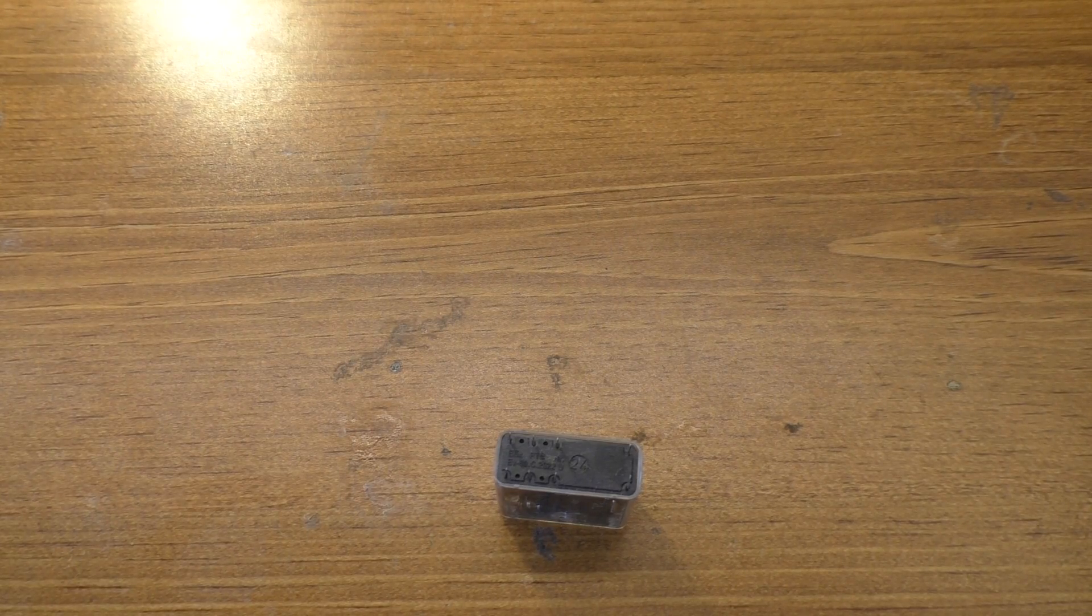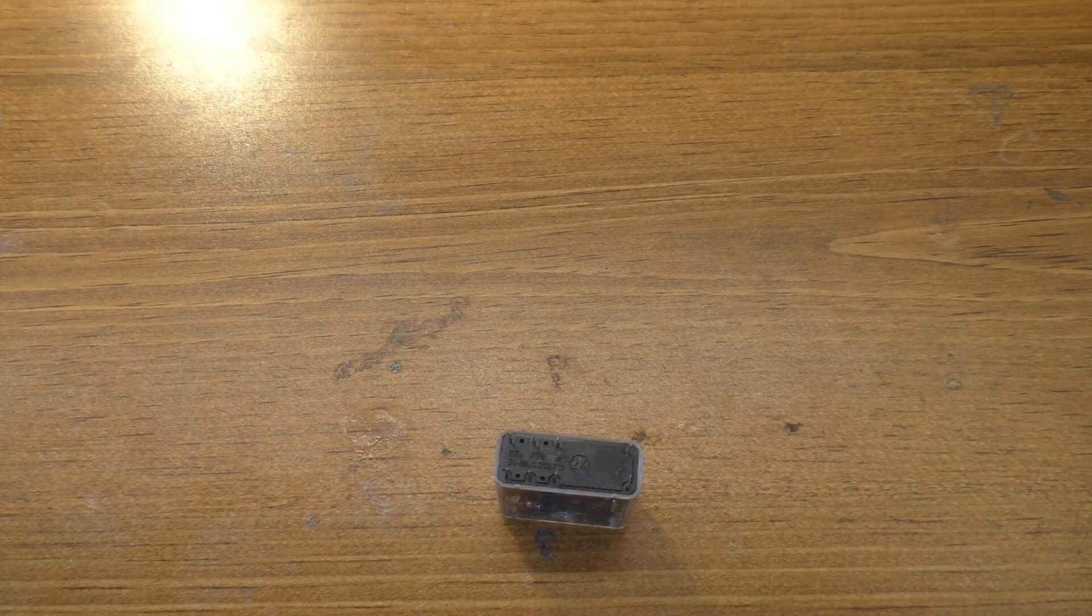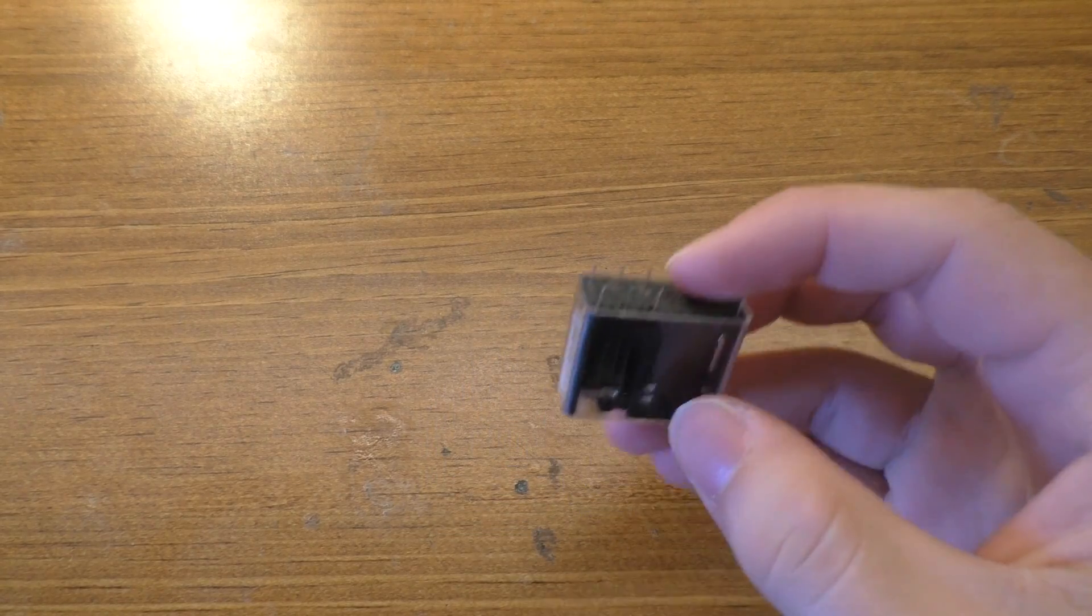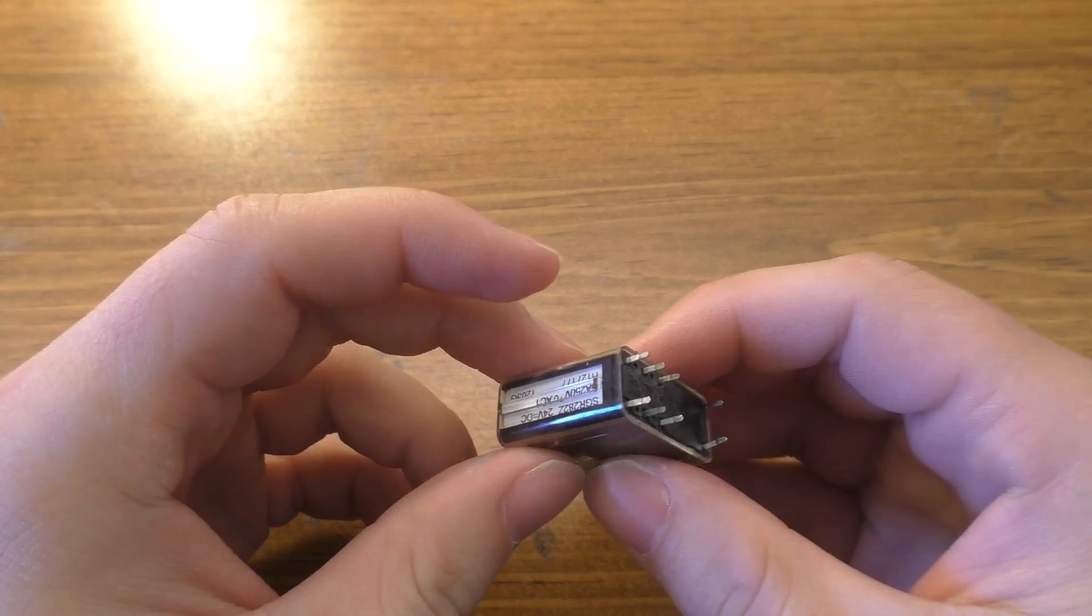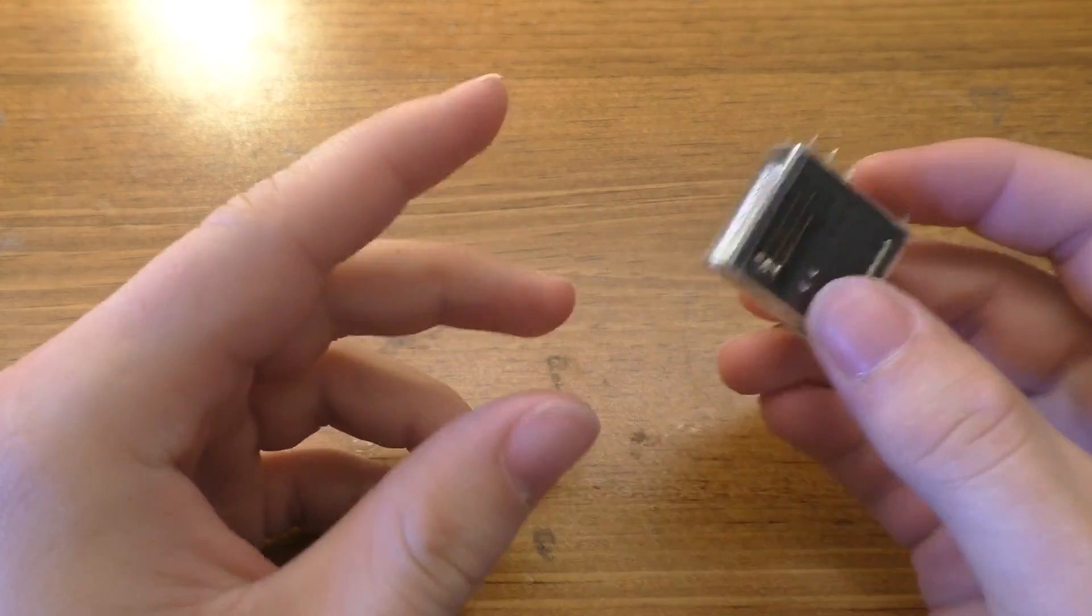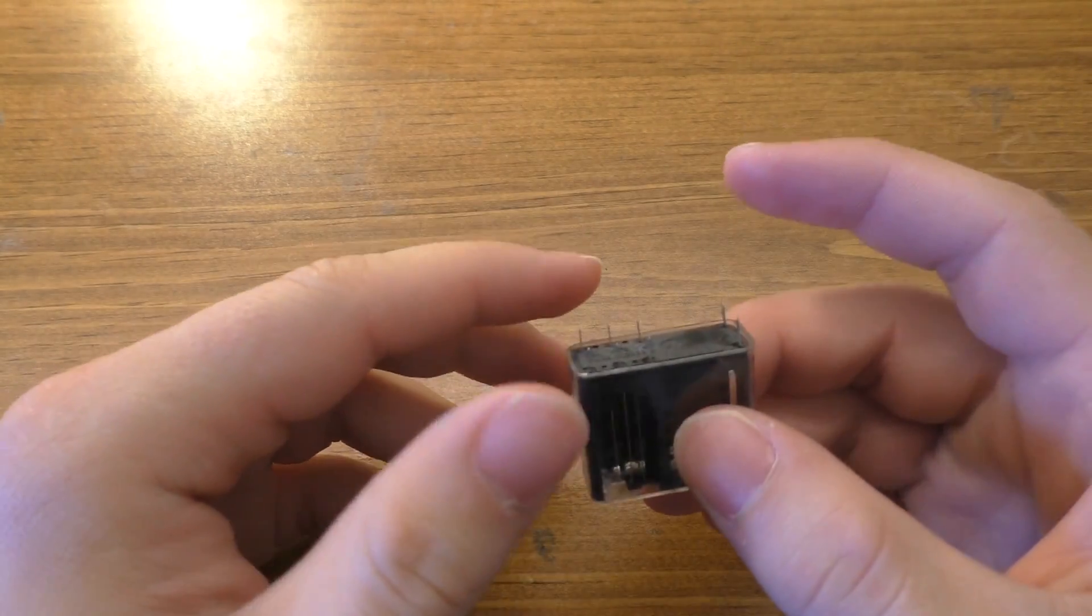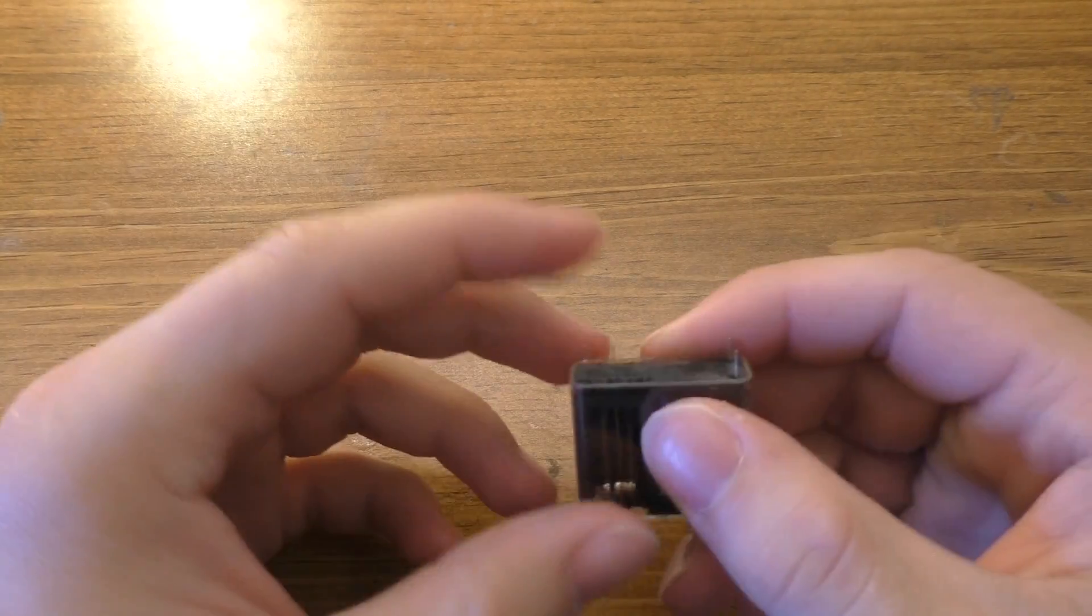Hey guys, today we're going to be taking a look at using a double pole double throw switch or a double pole double throw relay in order to control the direction of a DC motor or basically reverse the polarity of any direct current device.